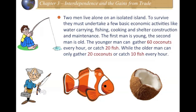The young man can gather 60 coconuts every hour, or in the same hour he could catch 20 fish. The older man, in an hour, can gather 20 coconuts or catch 10 fish. We can connect this to the trade-offs we've looked at before and say that if the young man chooses to gather coconuts, he gives up the opportunity to catch 20 fish, while the older man also has a certain opportunity cost.